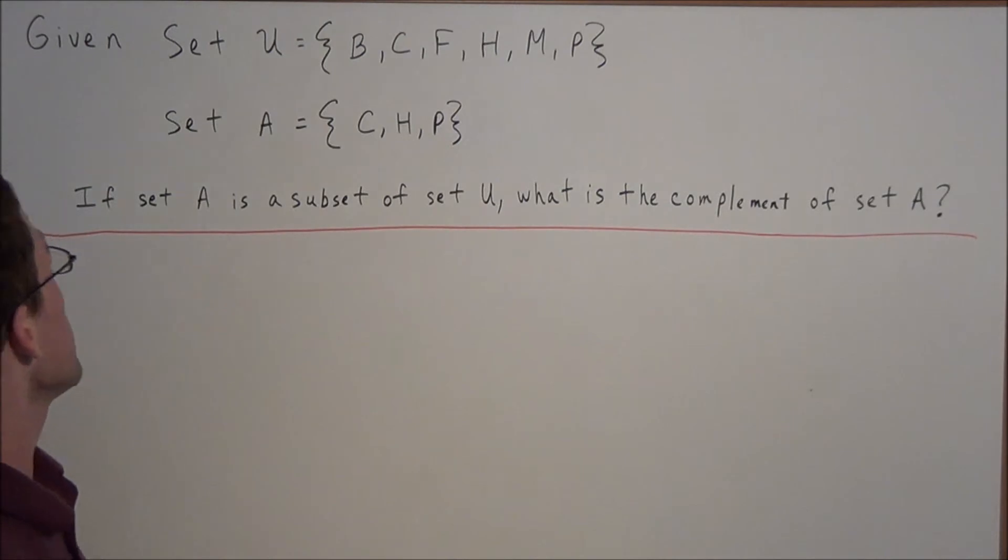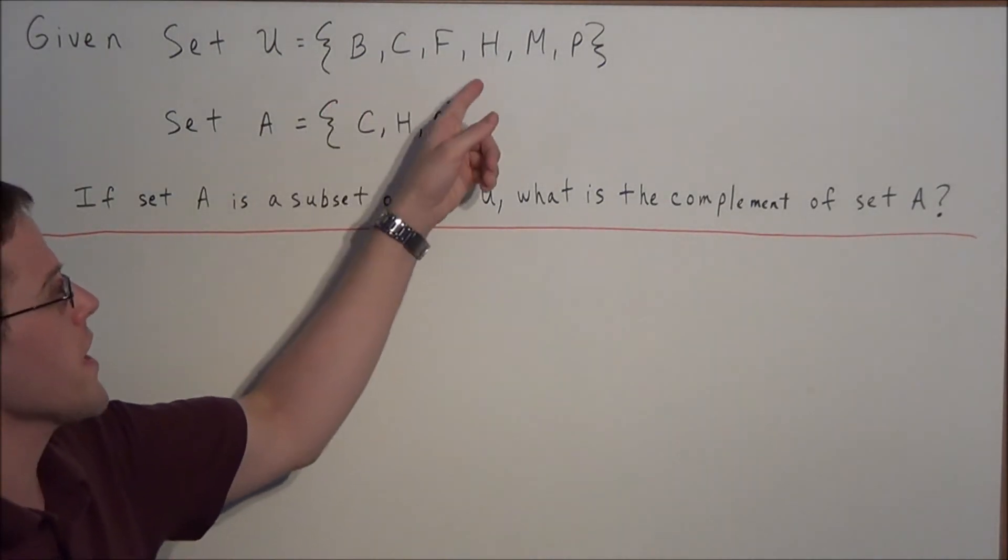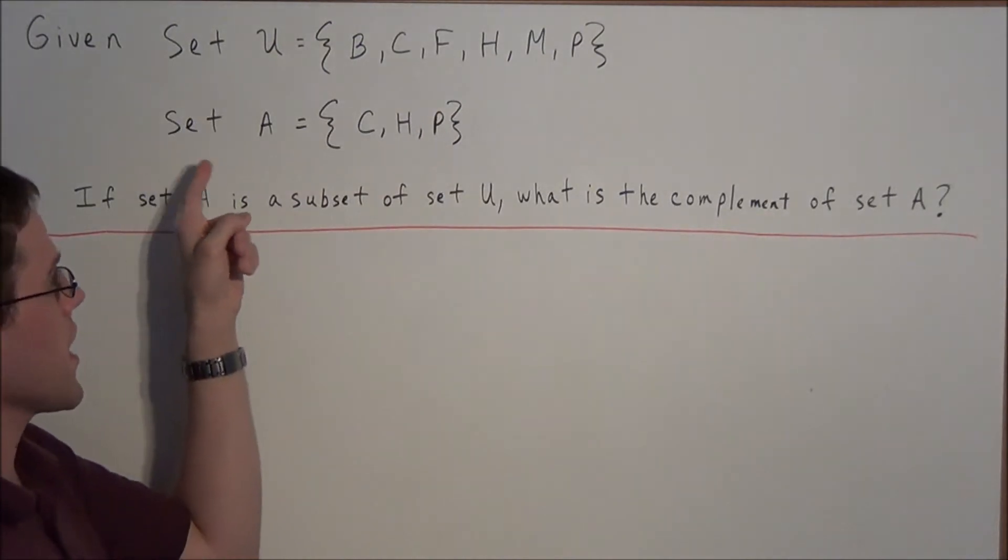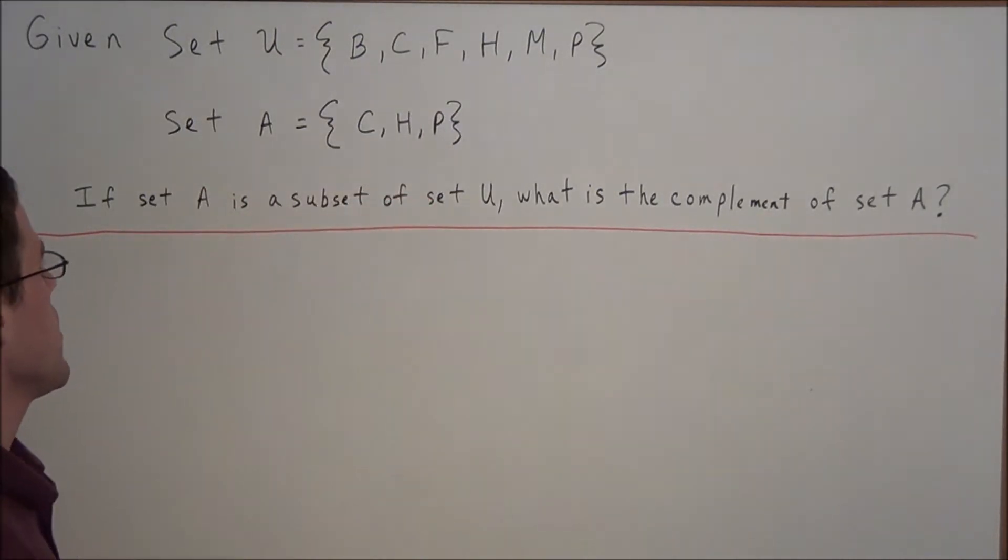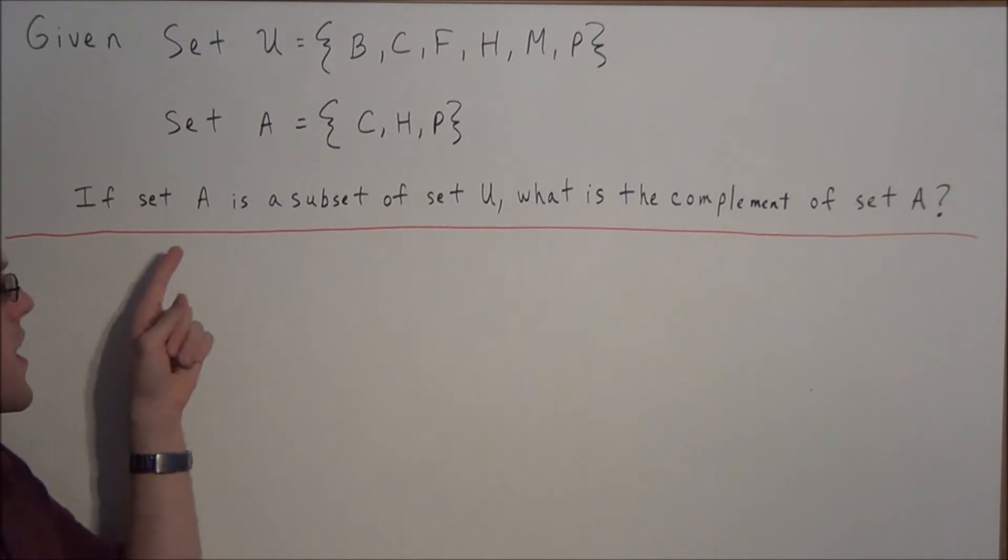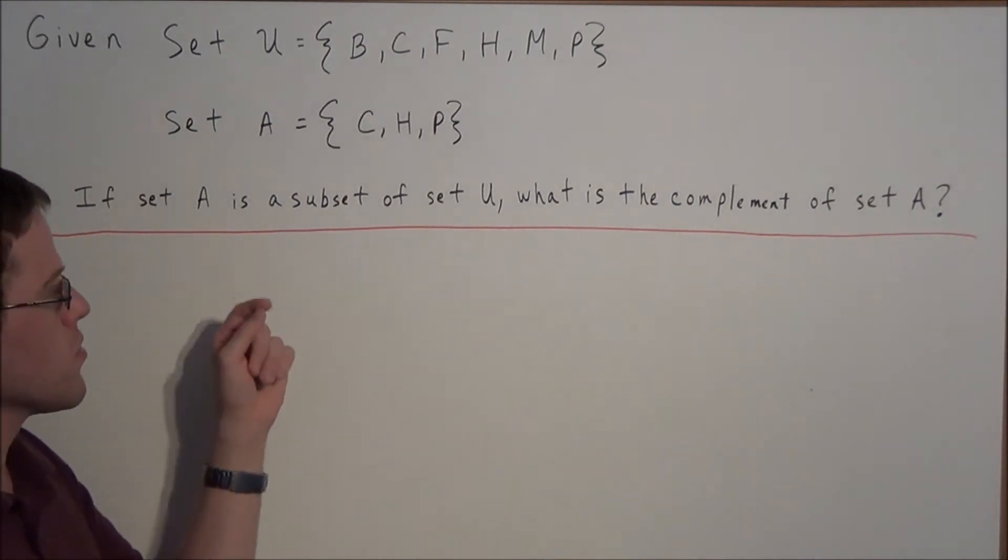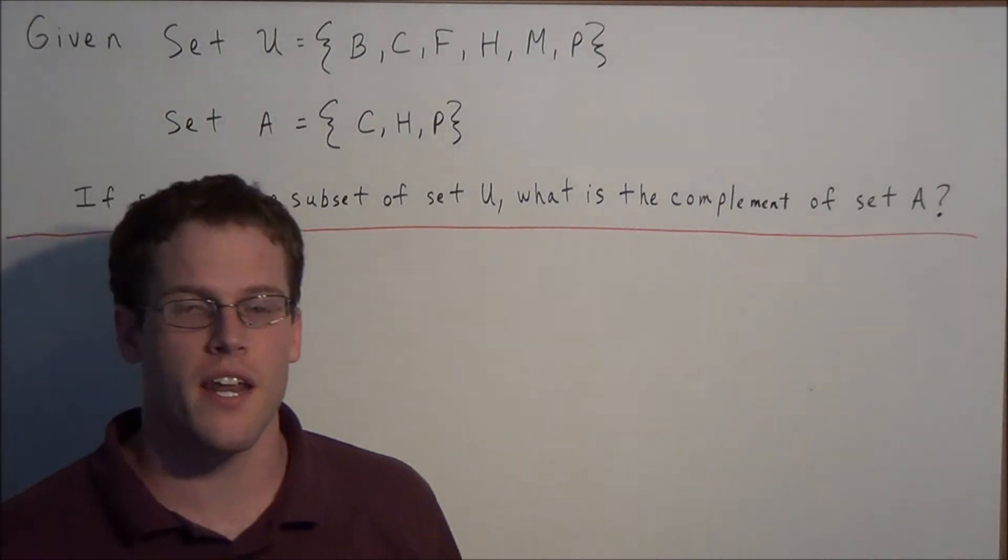So we have the question, given set U with elements B, C, F, H, M, P, and set A with elements C, H, P, we need to answer the question, if set A is a subset of U, what is the complement of set A?